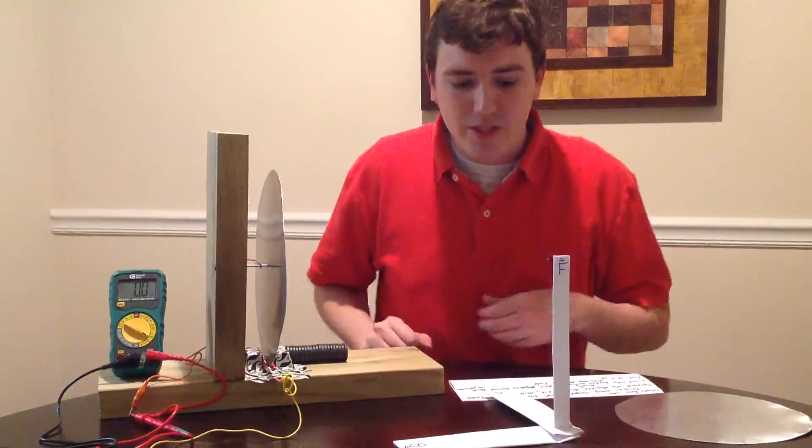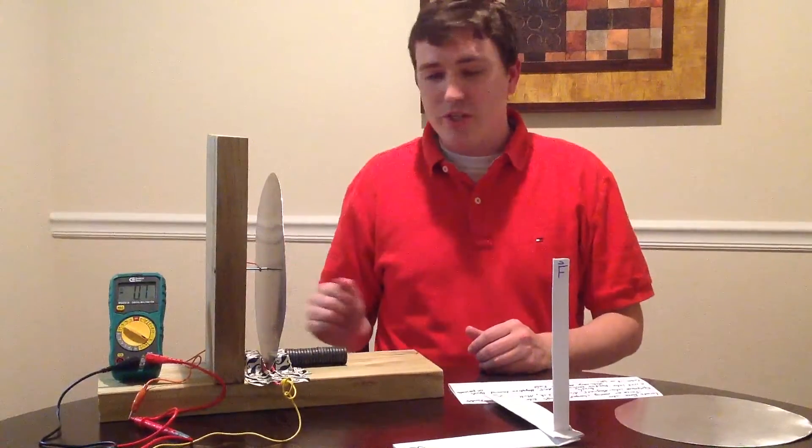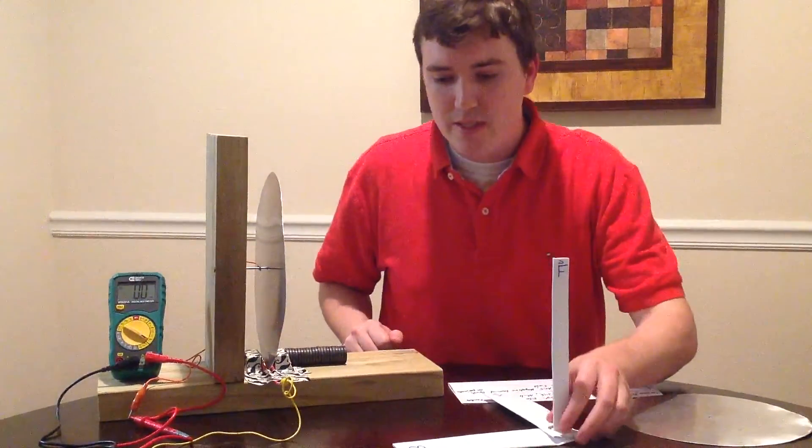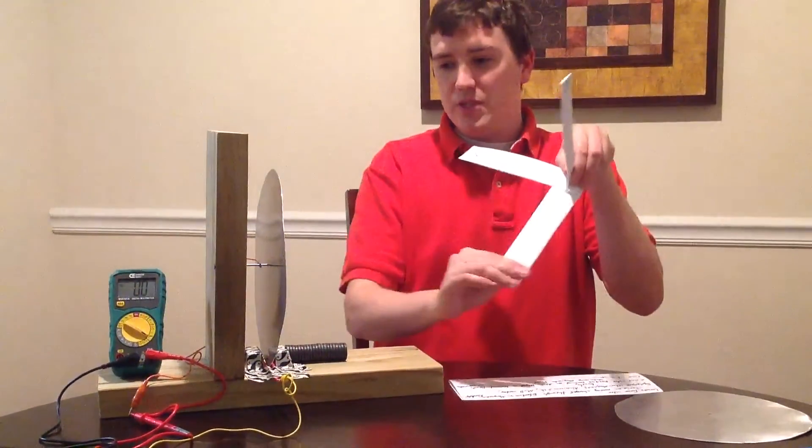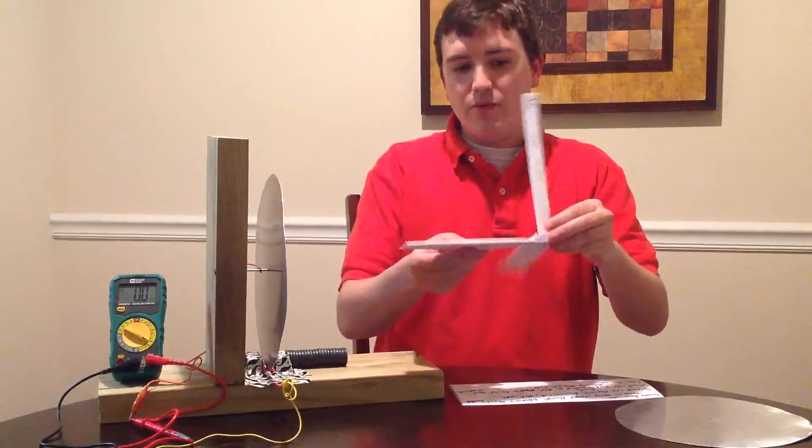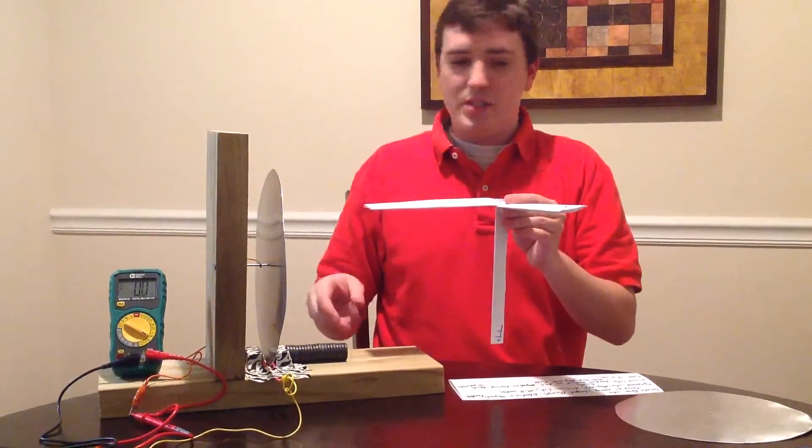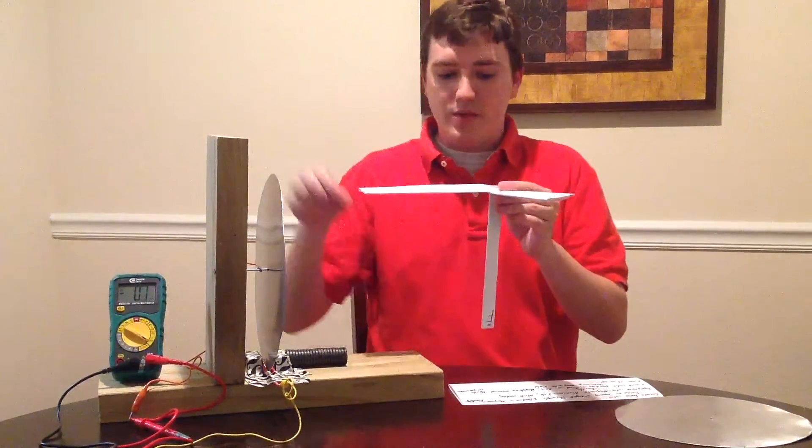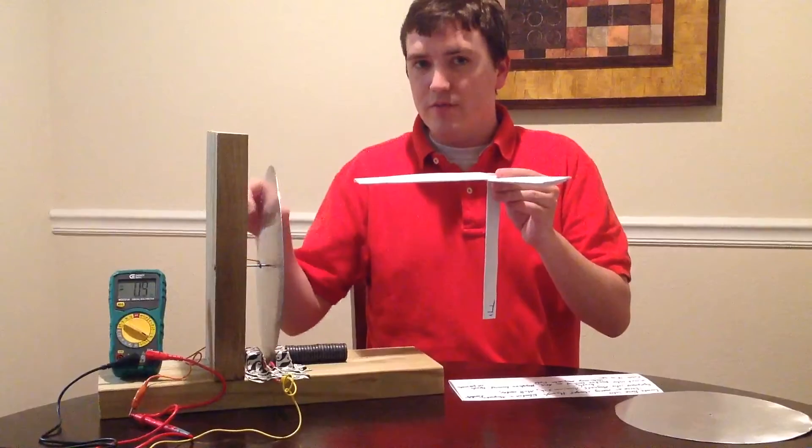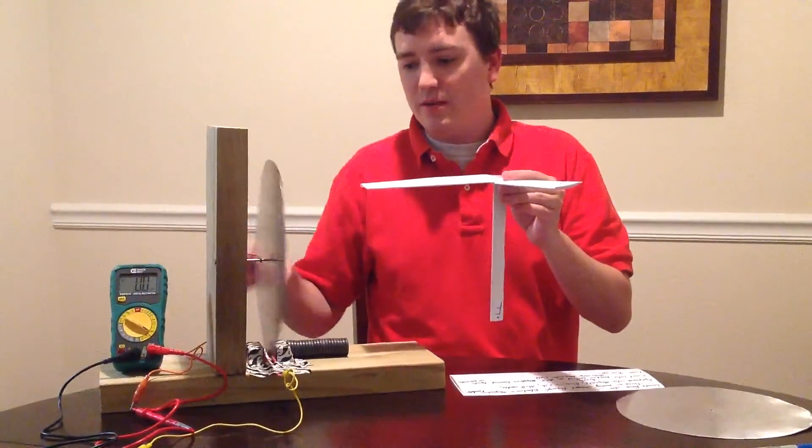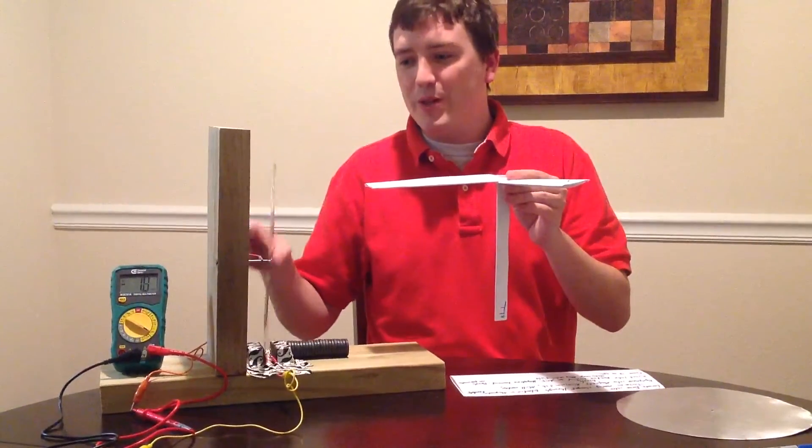To generate a negative voltage, we can reverse the direction of our spins. The magnetic field intensity will stay the same direction, but if we change the direction of the velocity and have that part of the disc spinning in this direction, we should be getting a negative voltage, approximately negative 1 to 3 millivolts.